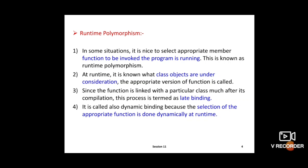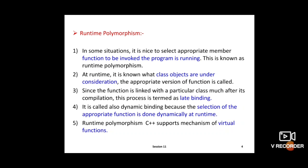Dynamic binding requires use of pointers to objects. When runtime polymorphism is used — meaning when virtual functions are used — pointers to objects are required. We will see what pointers to objects mean in the next session. C++ supports the mechanism of virtual functions for runtime polymorphism.